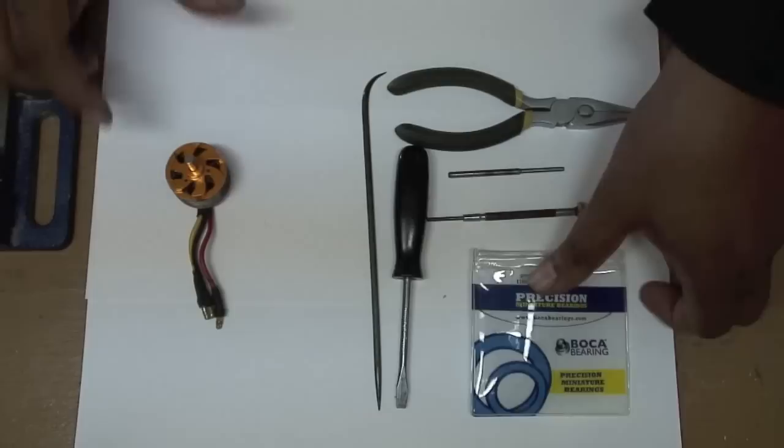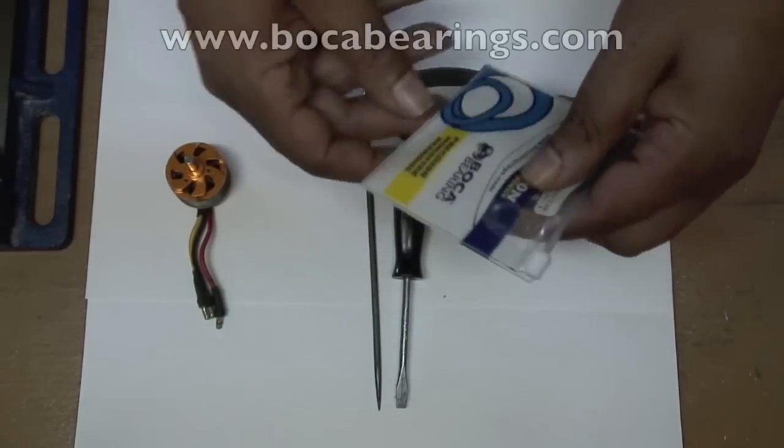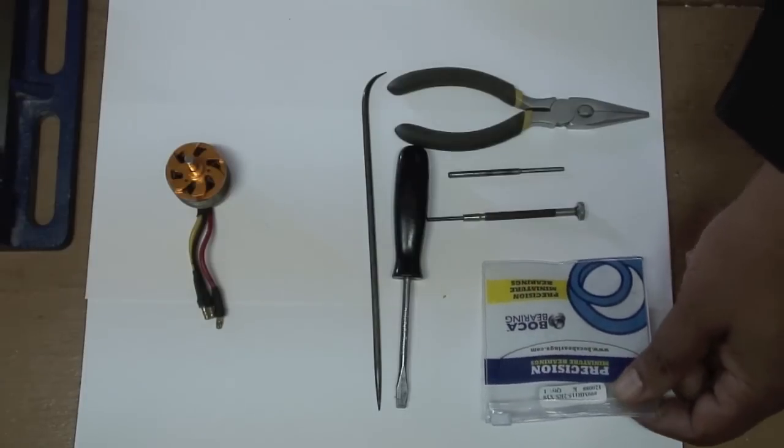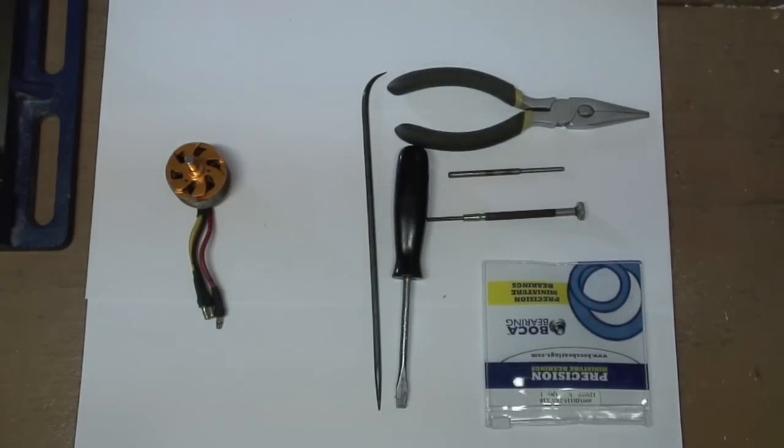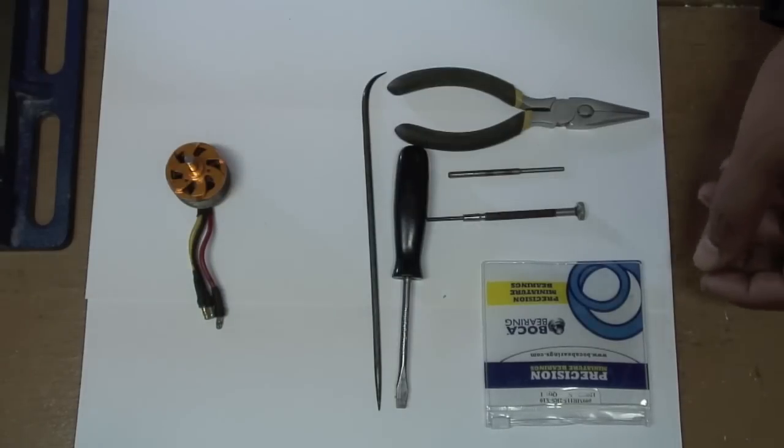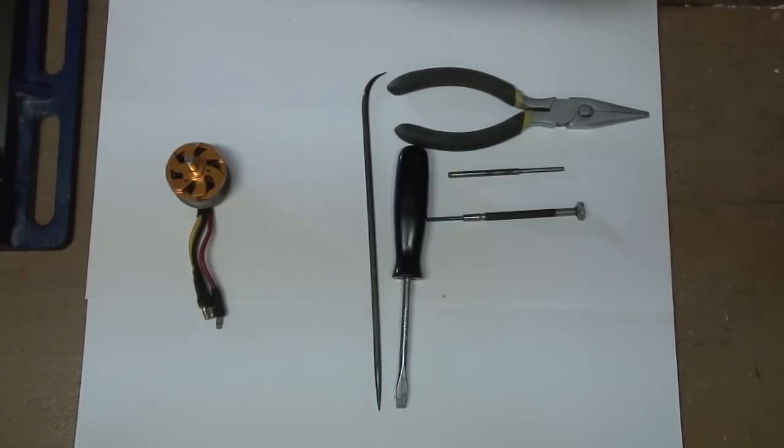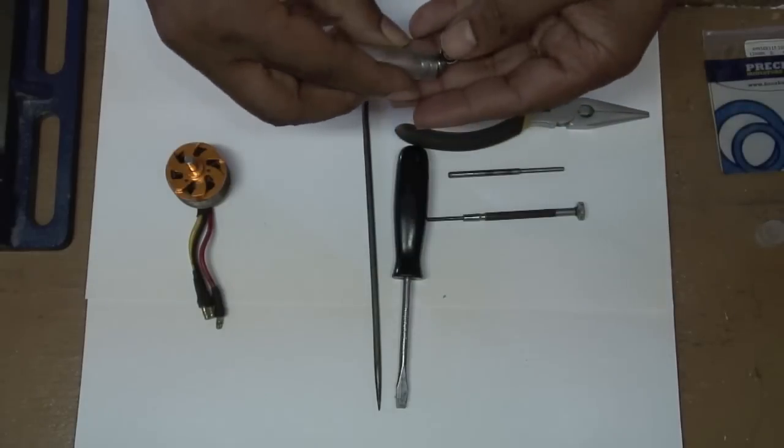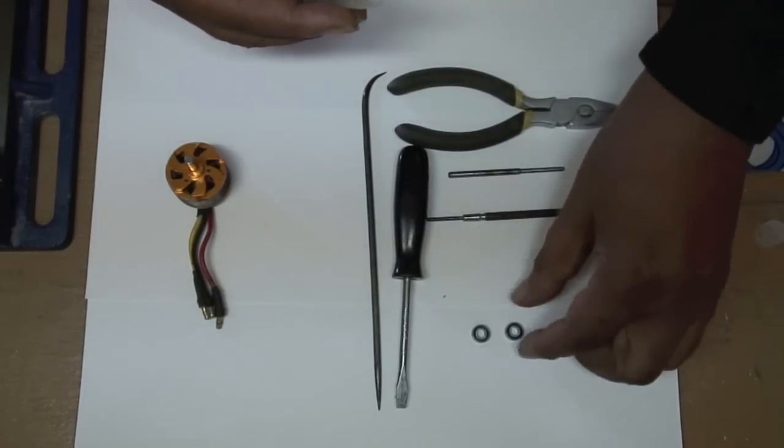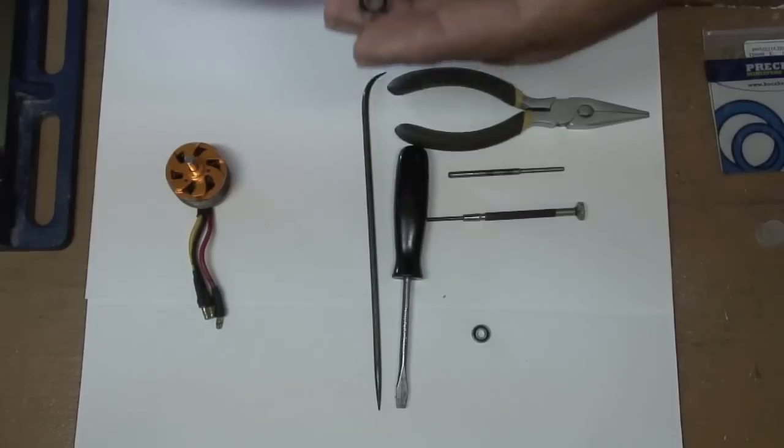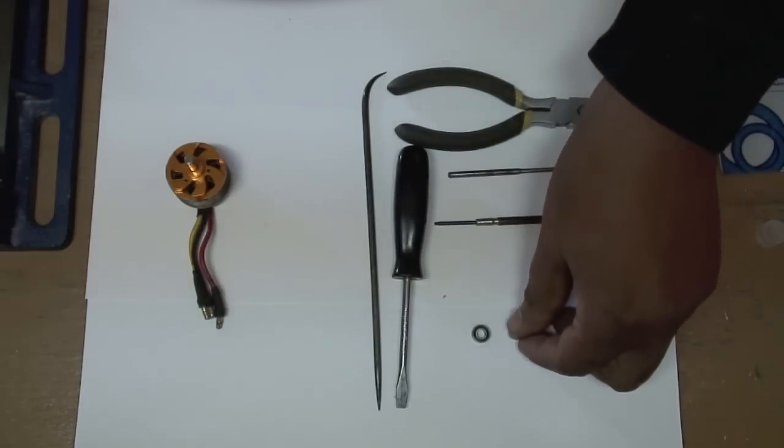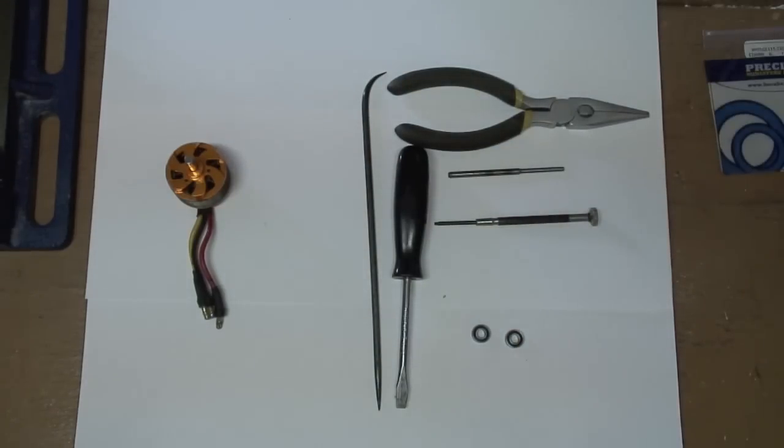I have purchased some new bearings from Boca Bearings. They're precision bearings. You can get them at BocaBearings.com. They come in different forms, but for this motor, I had pre-ordered these. I'm going to take out two. What I like about these bearings is that they come sealed. They're grease sealed, so you never have to worry about packing them with grease or oiling them in the future. Just basically replace them.